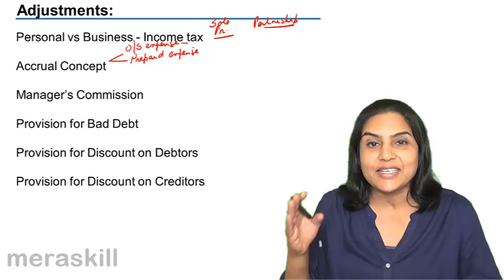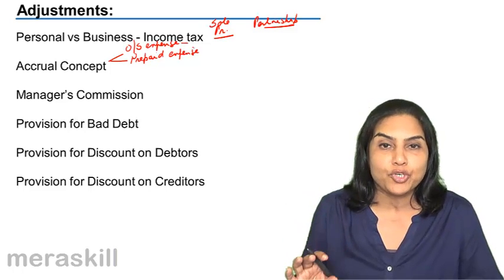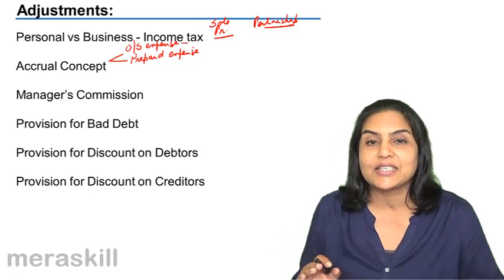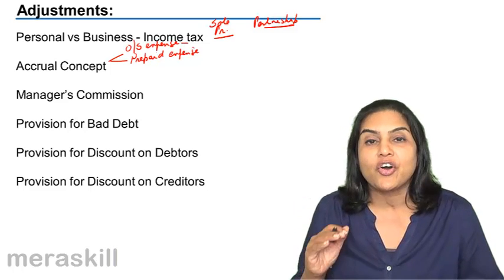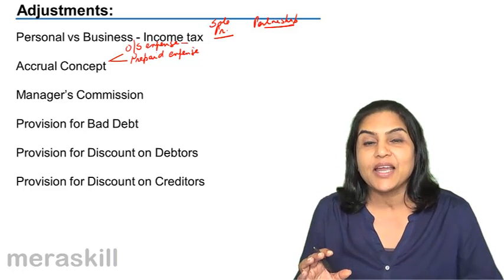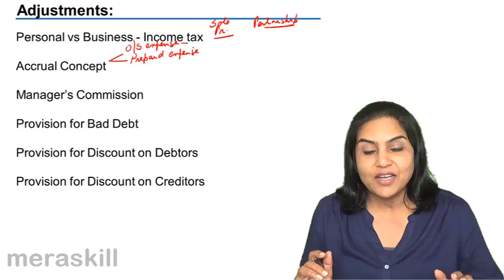In such a case, as at the year end, we may have some portion of the insurance which is actually related to the next year. This is the unexpired insurance or it is called prepaid expense and this becomes an asset for us because it is a receivable.